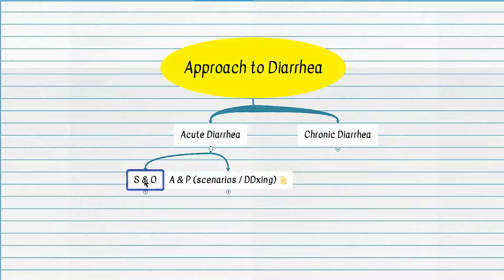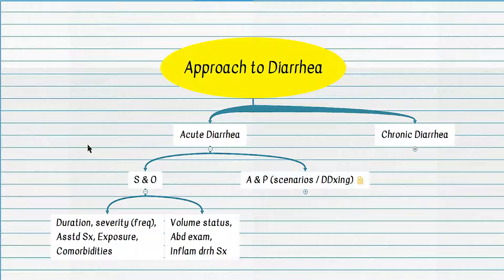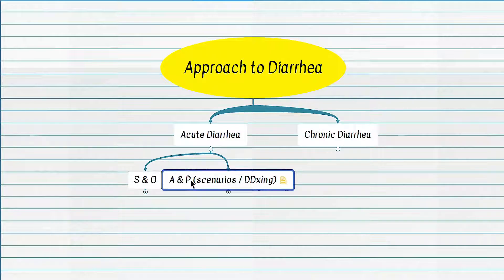The focus of history and physical examination in patients with diarrhea should include: first, duration; severity explained as frequency of bowel movements; presence or absence of associated symptoms; and any type of exposure or underlying conditions. On physical exam, the first thing to check is volume status, followed by abdominal exam, and signs indicative of inflammatory diarrhea such as fever, positive fecal occult blood testing, or severe abdominal pain.